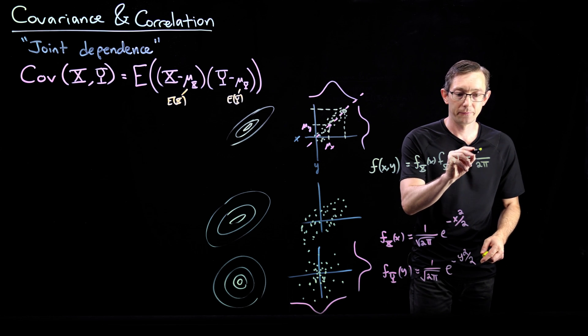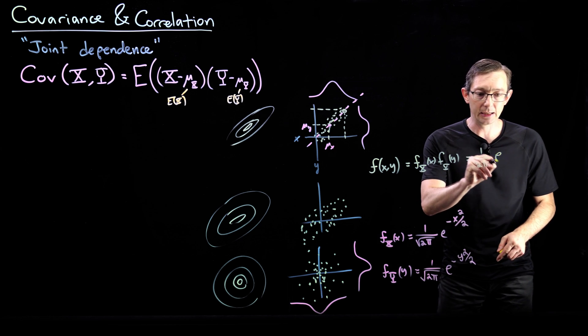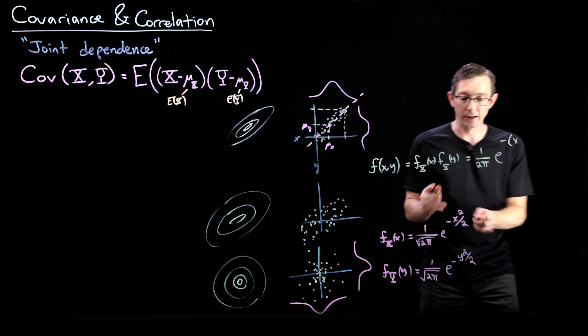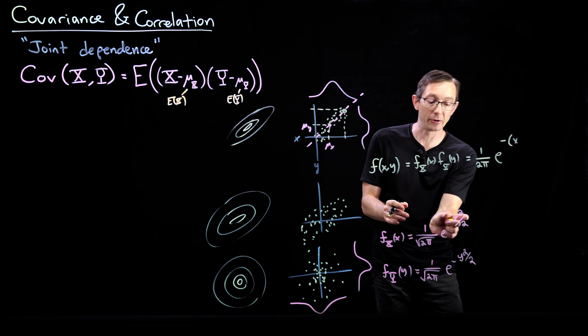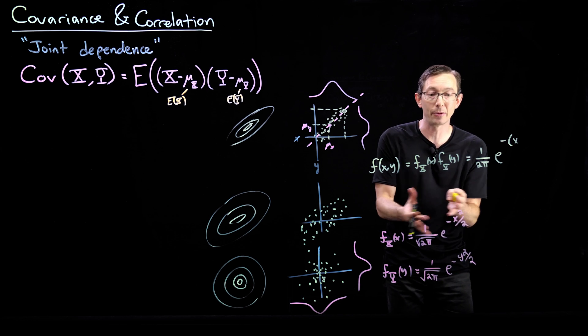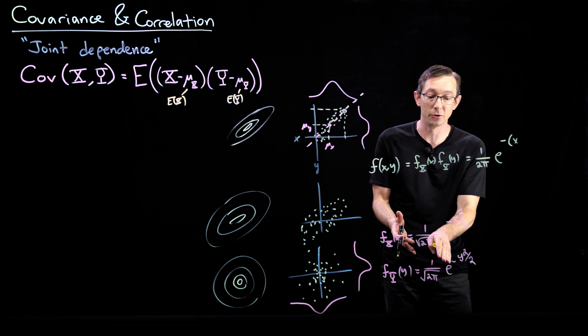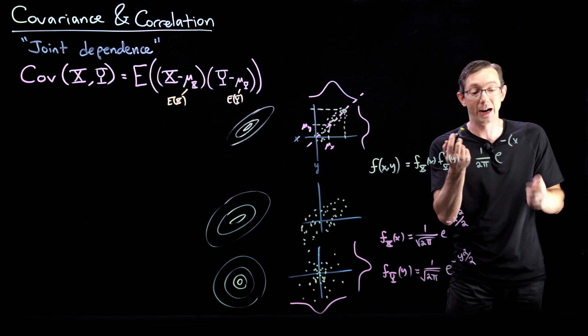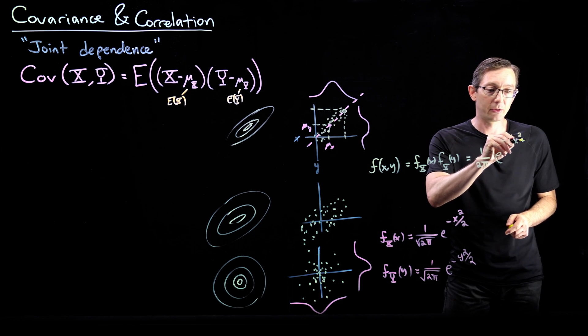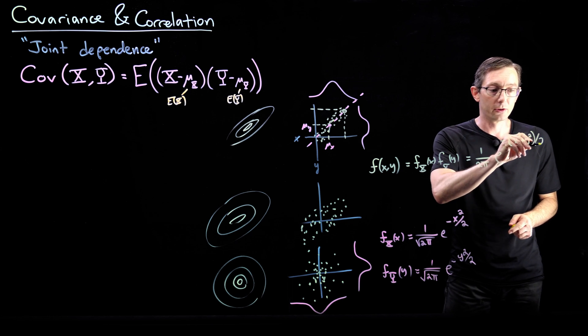...and if you multiply these, you're going to get this exponent plus this exponent, because when you multiply e to the minus x squared over 2 times e to the minus y squared over 2, you get e to the minus x squared plus y squared over 2.